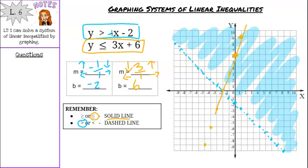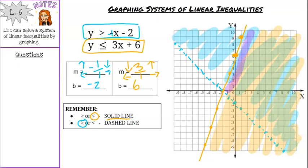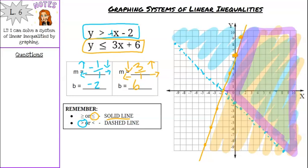It's a solid line, so connect all the points. Then shade lightly in the less than area — below the line. Now the reason we have three colors is because our solution set is only where the two colors overlap. Take your third color and shade darkly over where the blue and orange overlap. That overlapping area is the solution set for the system — where both inequalities intersect. That is how we graph a system of linear inequalities.